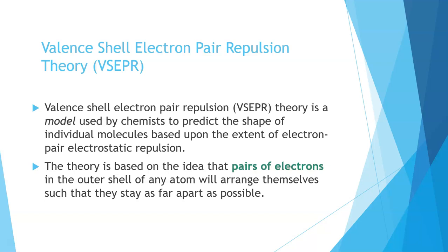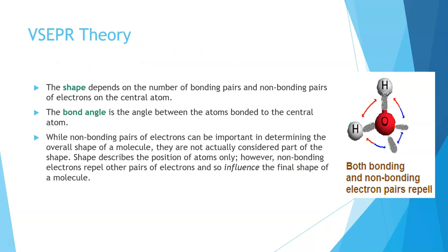Because electrons are all charged the same — they're all negatively charged — they will want to arrange themselves around the atom as far apart as possible. If we have a central atom with a number of bonds attached, these bonds will, in three-dimensional space, be as far apart as possible. We often draw atoms in two dimensions, but we need to think in three-dimensional space.